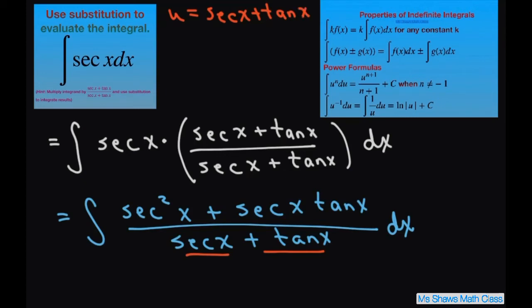Our derivative of u is going to be, for secant x, secant x tan x, and for tan x, plus secant squared x dx.